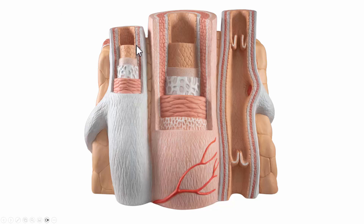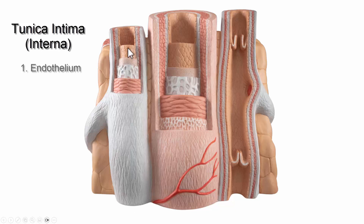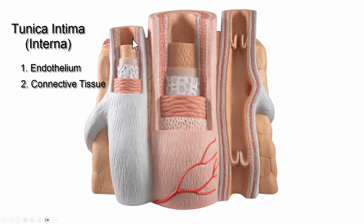Let's take a look at this vein. The tunica intima or tunica interna is made up of a couple of parts: we have the endothelium, and then the subendothelium which is made up of connective tissue and basal lamina. This endothelium is going to be very thin — just one cell layer thick. The type of tissue it is is simple squamous epithelium.